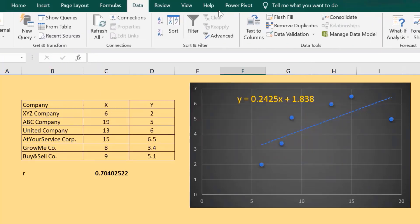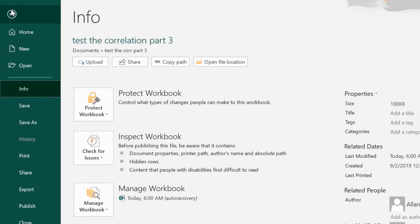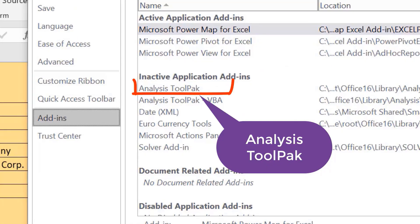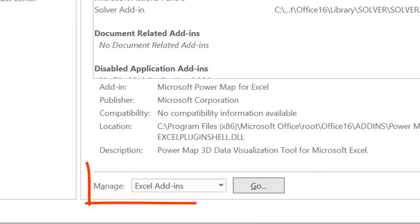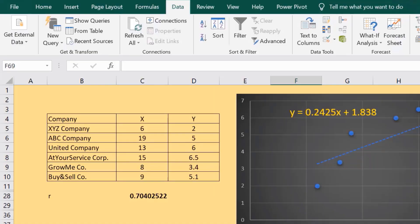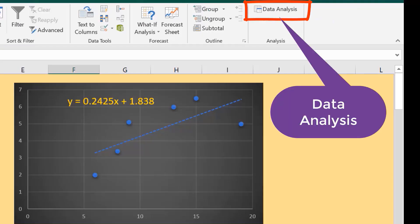Go to Data, then click Data Analysis. Since we don't have it, we have to download it. Go to File, then click Options. Excel Options will pop up. Click Add-ins, highlight Analysis Toolpak. Next to Manage Excel Add-ins, click Go. Check Analysis ToolPak, then click OK.